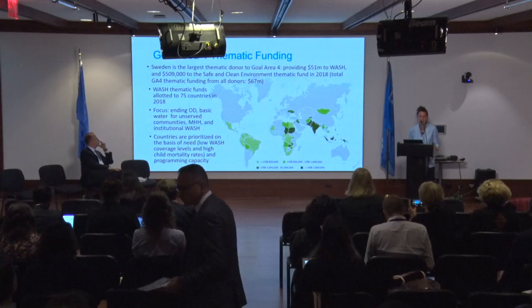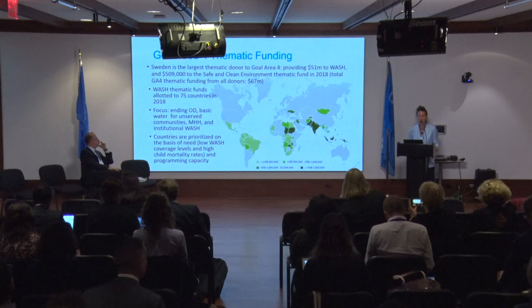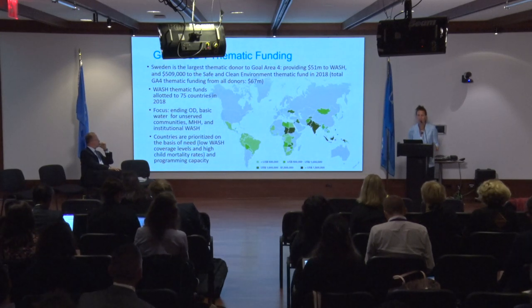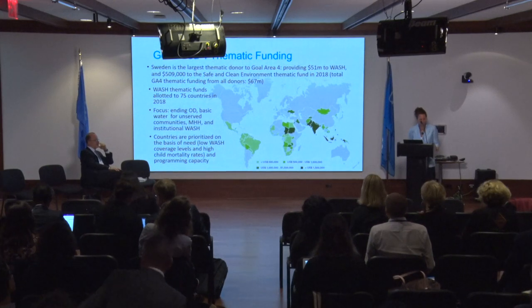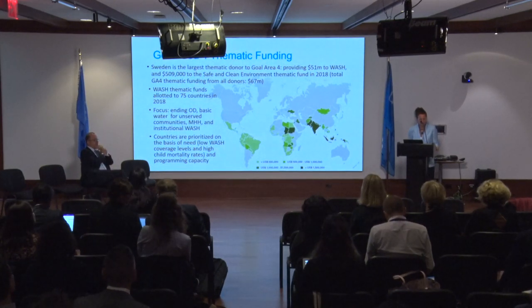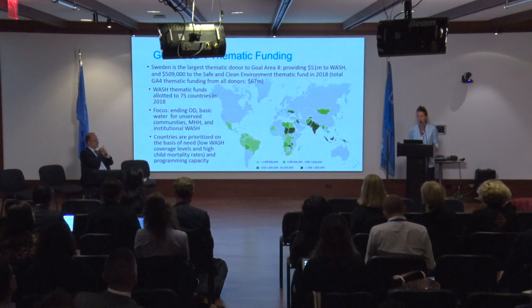In terms of funding, Sweden is the largest thematic donor to Goal Area 4, providing $51 million to WASH and over $500,000 to the Safe and Clean Environment Thematic Fund. Our total thematic funding is $67 million for both funds. These funds have supported programming in 75 countries with a focus on achieving our strategic plan targets, predominantly ending open defecation, achieving basic water and sanitation services, menstrual hygiene management, and institutional WASH in schools and healthcare facilities.